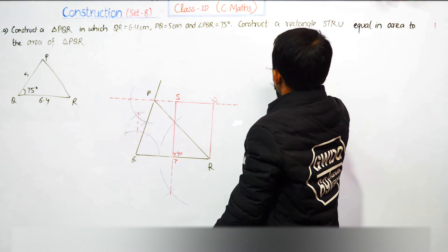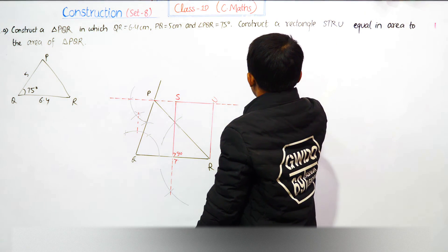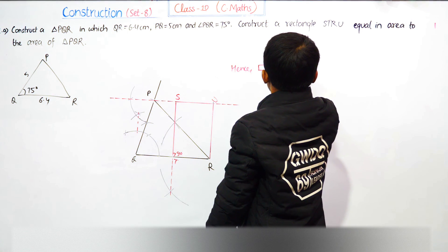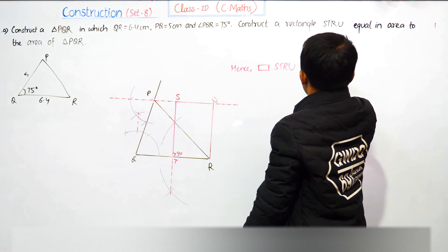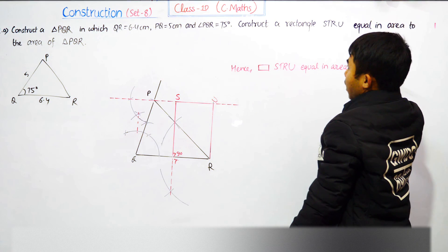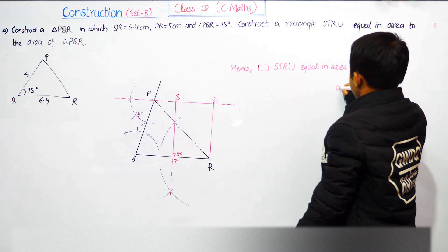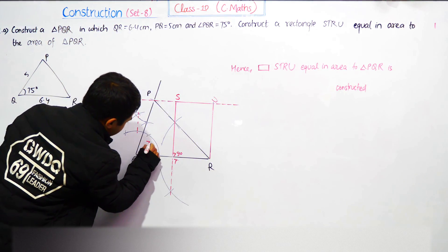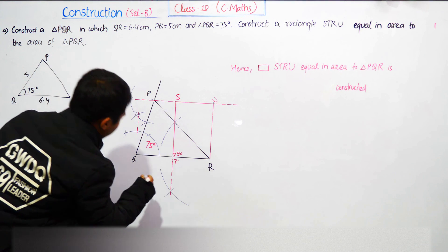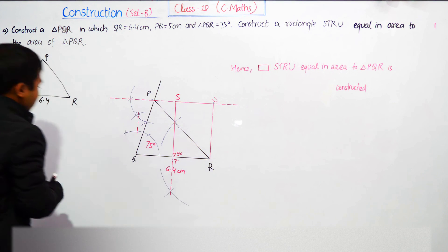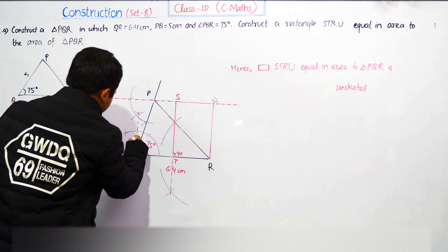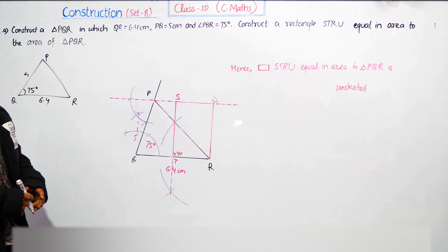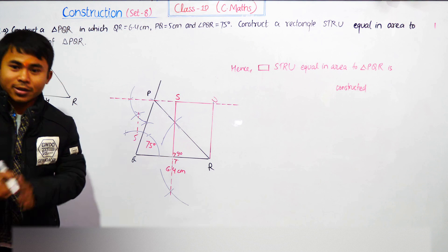Write: Hence, rectangle STRU is equal in area to triangle PQR — is constructed. That's it for this question. We will do question 9 and onwards in another video. Thank you. Dhanyabaad!